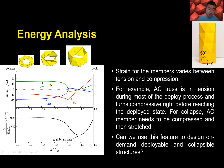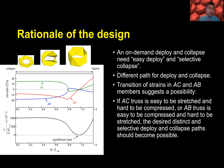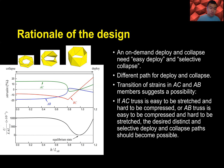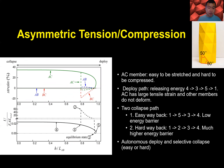The asymmetric structure and the strain transition from tension to compression gave us an idea: can we use this feature to design on-demand deployable and selectively collapsible structures? If the AC member has an easy stretch but hard-to-compress behavior, then during the deploy process it can be very easy, but during collapse, the hard-compress capability of AC will make the structure hard to collapse — achieving easy deploy and selective collapse.